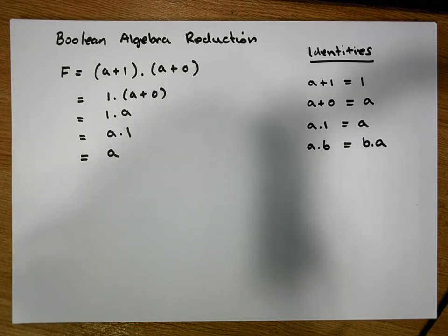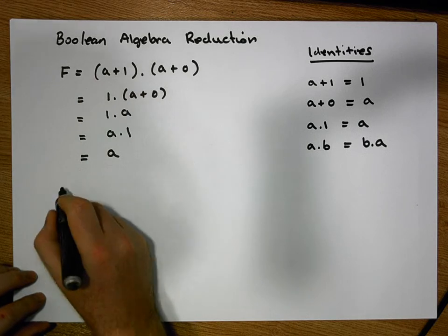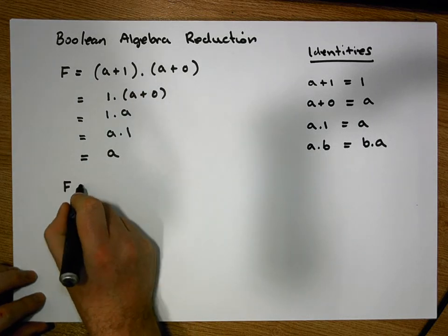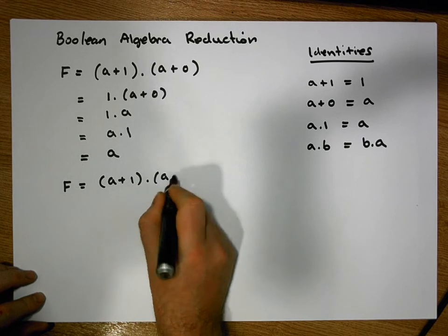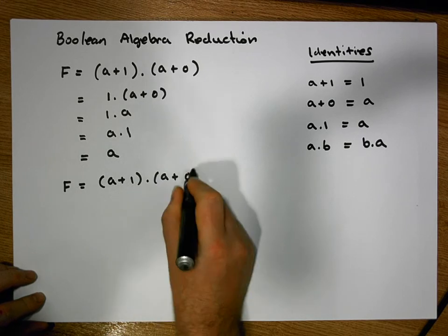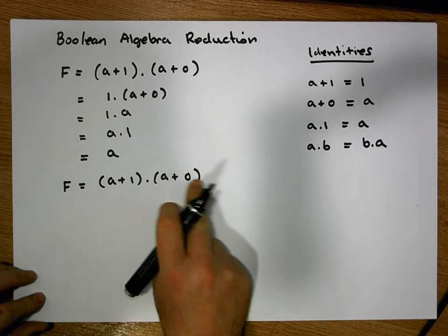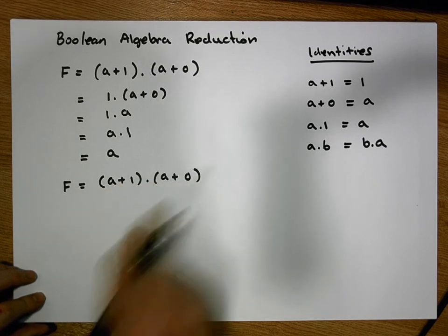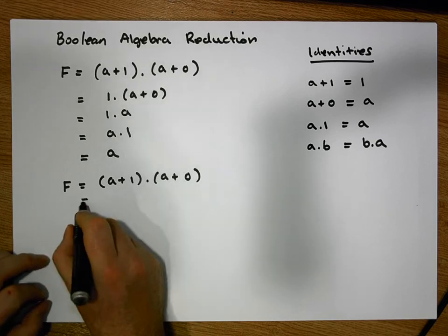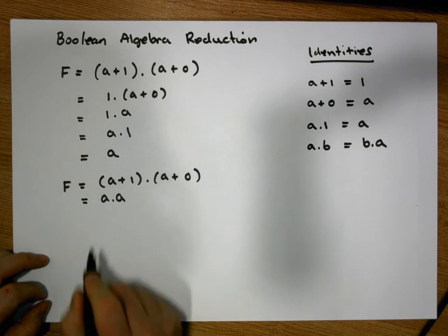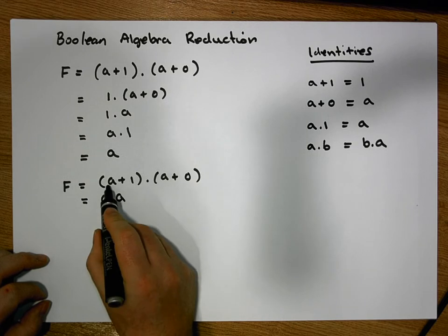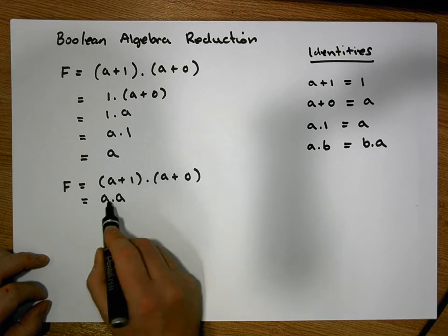We could have done this many other ways — let's do this again a little bit quicker. What we could have done is distributed both terms across the AND and the OR. So this would have become a AND'd with a, then a AND'd with 0.